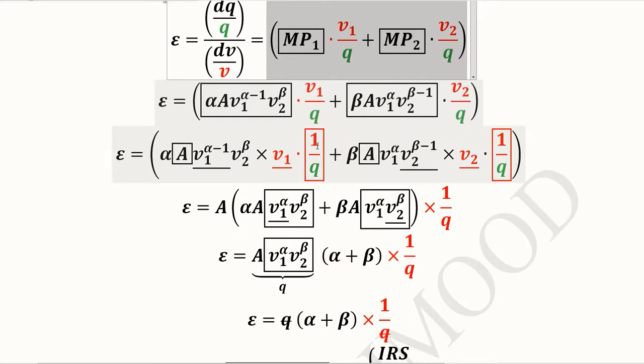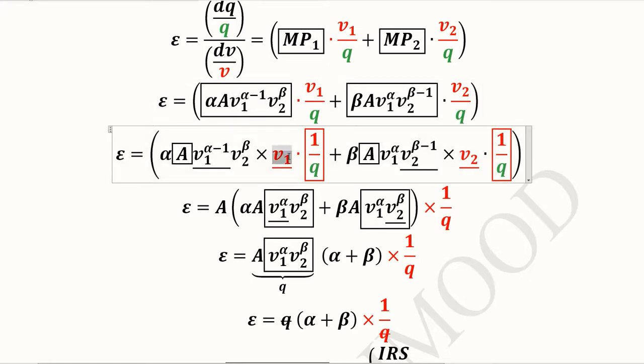Now we can focus on those terms that can come out as common factors. It is 1 over Q here and here. We have separated V1 and V2. This V1 can interact with V1 raised to the power alpha minus 1, so this V1 can be cancelled out, and we will be left with V1 raised to the power alpha. Here again, V2 can be cancelled out with V2 raised to the power minus 1. Interacting these terms, we get V2 raised to the power beta.